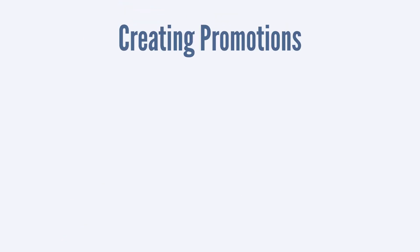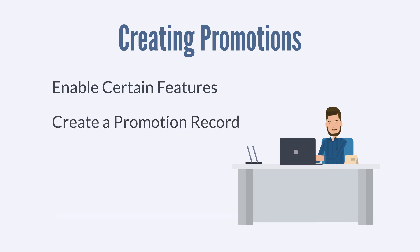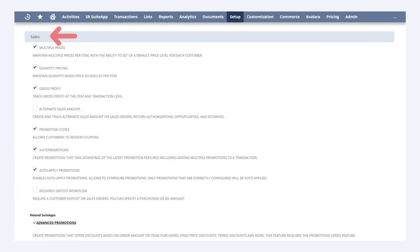So, how do you go about creating promotions in NetSuite? To create promotions in NetSuite, you'll need to enable a few features and then create a promotion record. First, there are several features you will need to enable. The first set of features are located in Enable Features. You can access them by navigating to Enable Features and selecting the Transactions sub-tab. Under the Sales section, check that Promotion Codes, Suite Promotions, and Auto-Apply Promotions are all turned on.